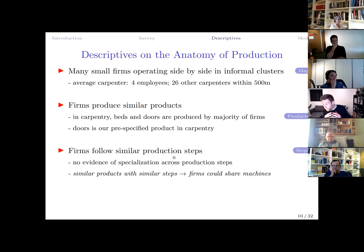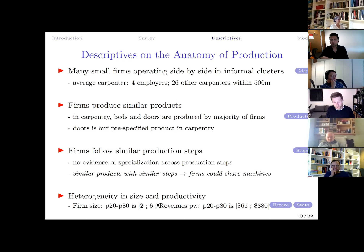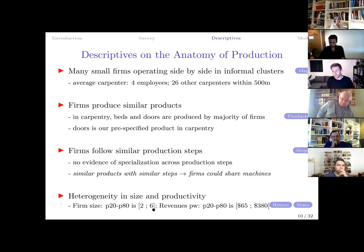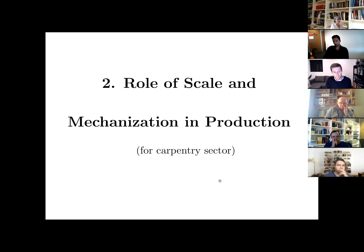While firms produce similar products, they are not identical. There is heterogeneity in size — the average carpenter has four employees, but about five percent have more than ten. There is also variation in revenues per worker, profit per worker, managerial education, and other characteristics. Some firms are more productive than others, and this heterogeneity is relevant for understanding who is likely to buy machines.